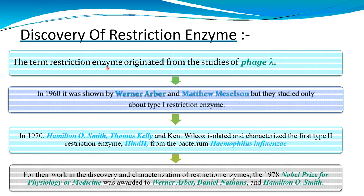The term restriction enzyme originated from the study of phage lambda. In 1960, Warner and Matthew Meselson studied type 1 restriction enzymes. In 1970, Hamilton, Thomas, and Kent isolated and characterized the first type 2 restriction enzyme, HindII, from the bacterium Haemophilus influenzae. For their work in the discovery and characterization of restriction enzymes, the 1978 Nobel Prize for Physiology or Medicine was awarded to Werner, Daniel, and Hamilton.